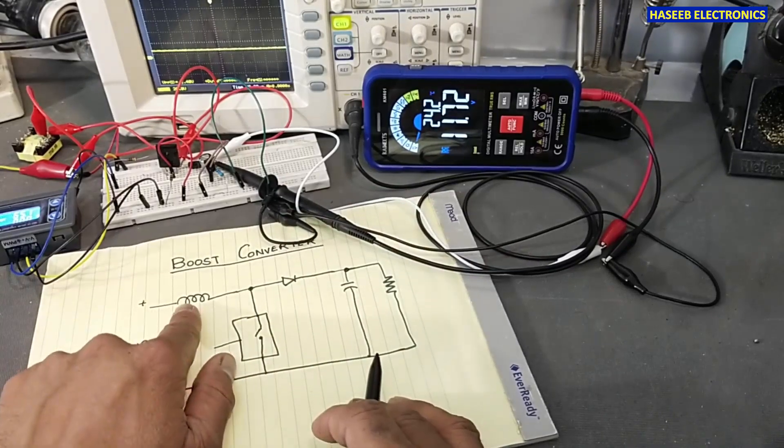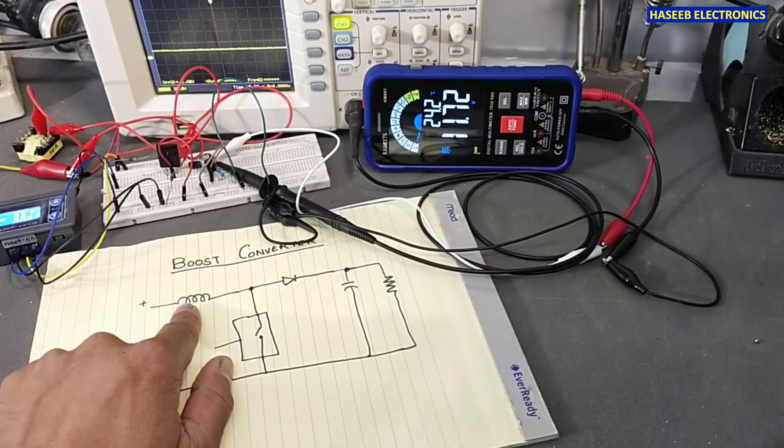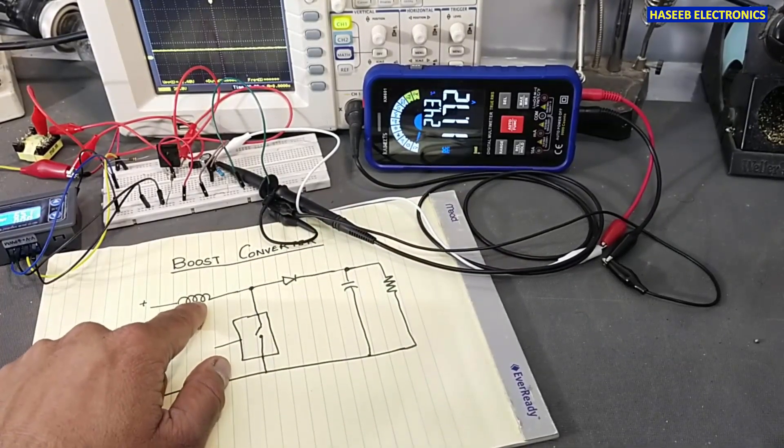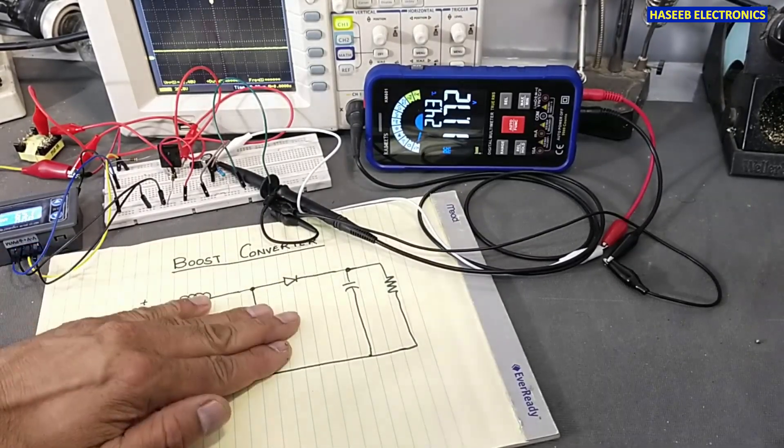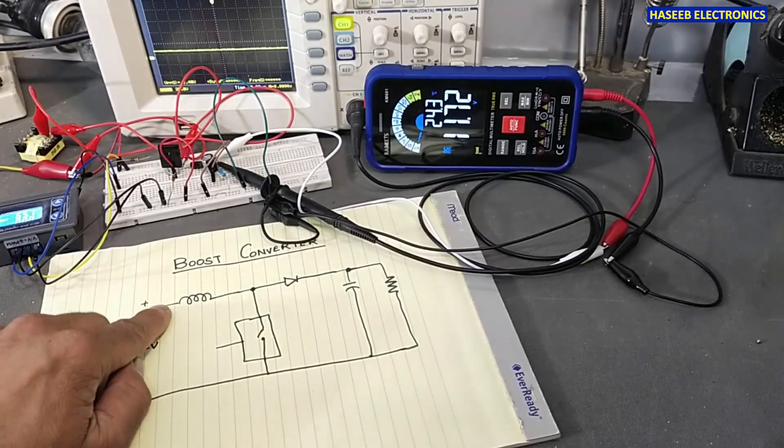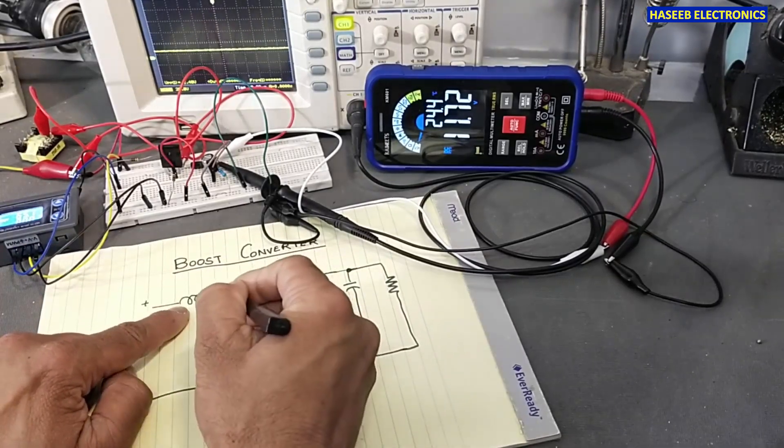It will cause heavy magnetic field to be created in this coil, in this inductor, so it will store energy. When it will turn off, normally this end was positive, this end was negative.